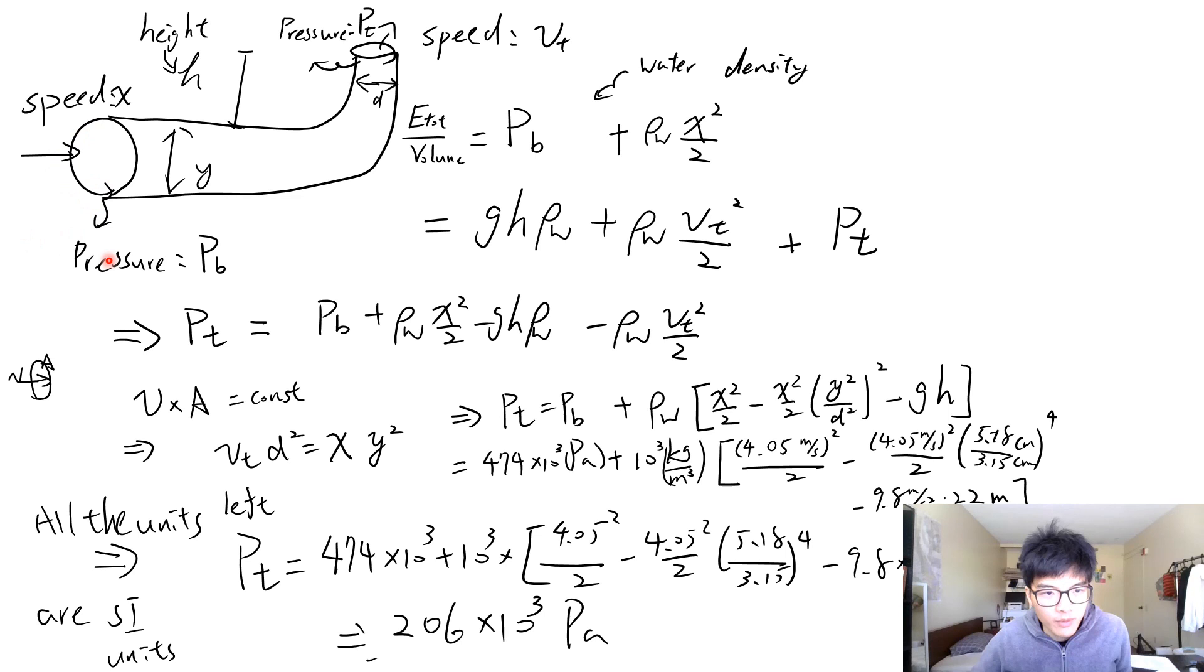So the pressure plus this is a kinetic energy. x is the speed of the flow at the basement here. So the density of water here, rho subscript w is the density of water, times the velocity, the speed squared divided by two. This is kinetic energy per volume.